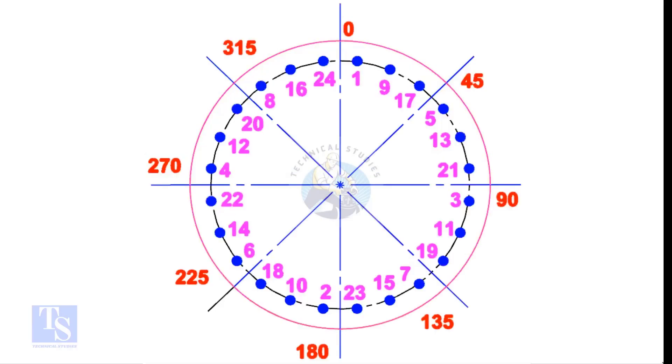For larger flanges, divide the bolts into eight equal groups. Apply the same method. The difference between the two nearest holes will be eight.